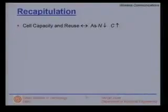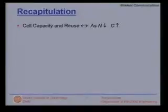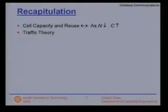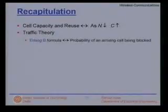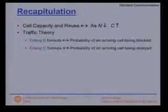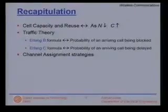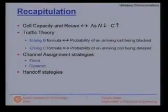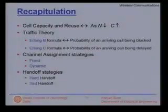Let us recapitulate. We learnt last time that cell capacity and the reuse factor are interlinked. As cluster size N decreases, the capacity of the system increases. We also learnt about traffic theory, including the Erlang B formula — which gives the probability of an arriving call being blocked — and the Erlang C formula — which gives the probability of an arriving call being delayed beyond a certain time. We then looked at fixed and dynamic channel assignment strategies, and hard and soft handoff strategies.